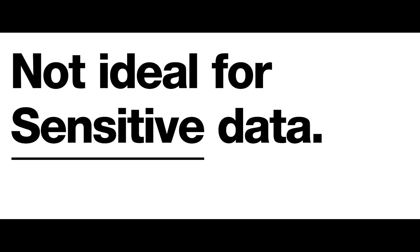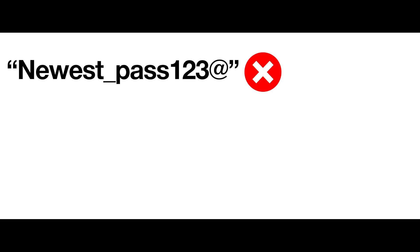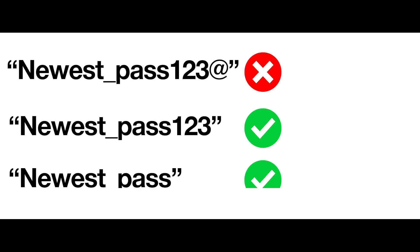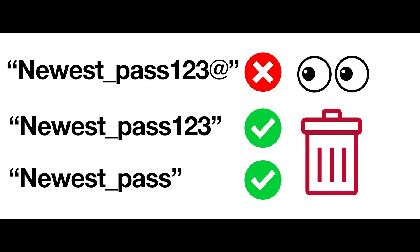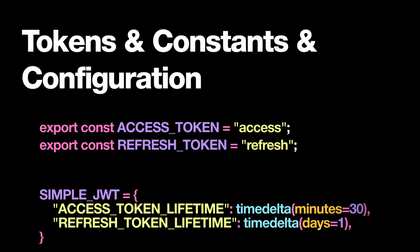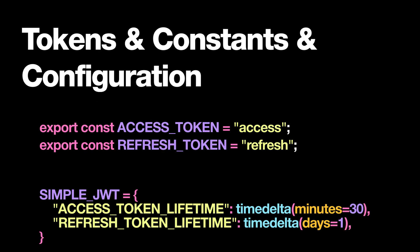Moreover, strings are not ideal for sensitive data. Because of immutability, when old data and passwords get deleted, modified copies of those credentials persist in RAM, increasing the exposure window until garbage collection reclaims it. However, they are great for fixed values like tokens, constants, or configuration.